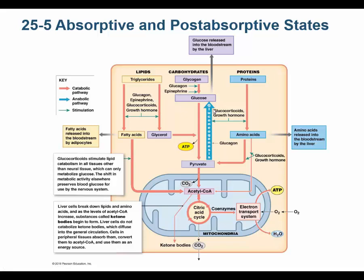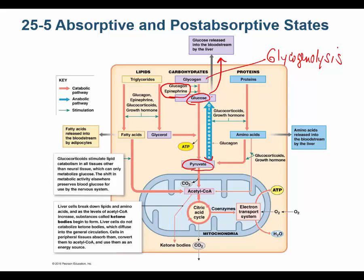In the post-absorptive state, glucose, amino acids, and lipids have dropped. The post-absorptive hormones — glucagon and epinephrine — tell cells to do glycogenolysis, breaking down glycogen into glucose. This glucose can be released to the bloodstream to restore blood glucose levels, or burned to make ATP. If more glucose is needed, pyruvate can be run through gluconeogenesis to make more glucose.